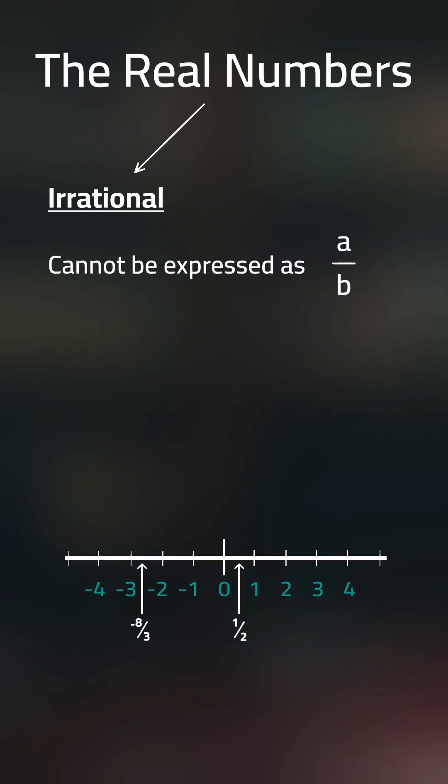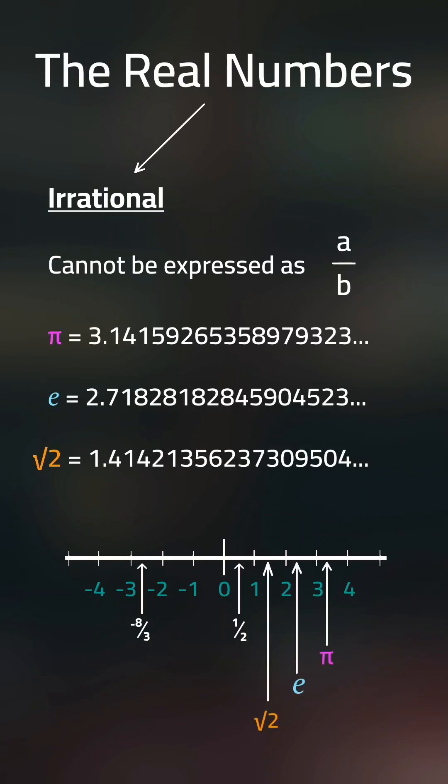Famous examples of irrational numbers are pi, e, and the square root of 2. However, we can still place these numbers on the number line.